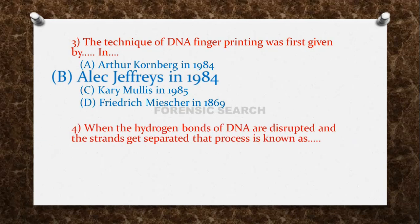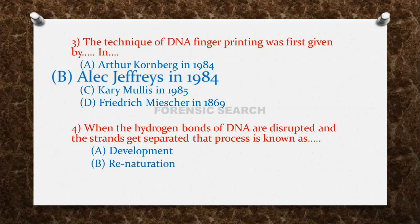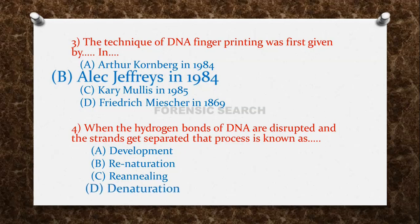The next question: when the hydrogen bonds of DNA are disrupted and the strands get separated, that process is known as? Option A: Development. Option B: Renaturation. Option C: Reannealing. Option D: Denaturation. The correct answer is option D — Denaturation.